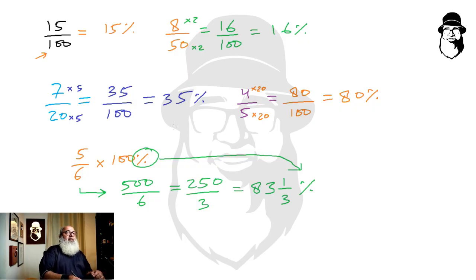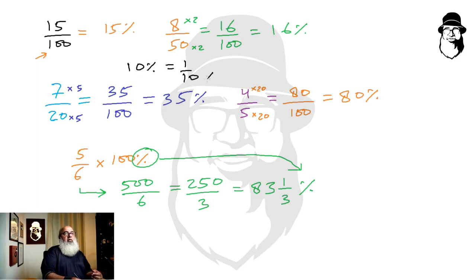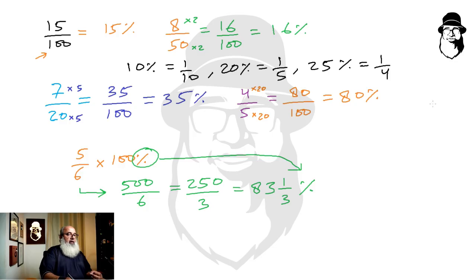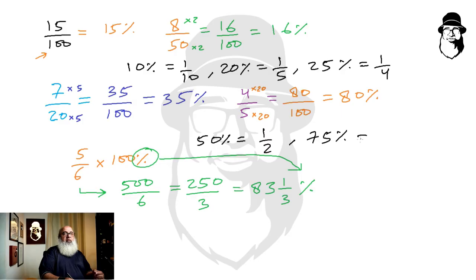There are some important percentage equivalents worth knowing because they appear frequently in classes and exams. Ten percent is one tenth, twenty percent is one fifth, twenty-five percent is one quarter, fifty percent is one half, and seventy-five percent is three quarters. Most percentage questions can be solved easily and mentally if you know these equivalents.